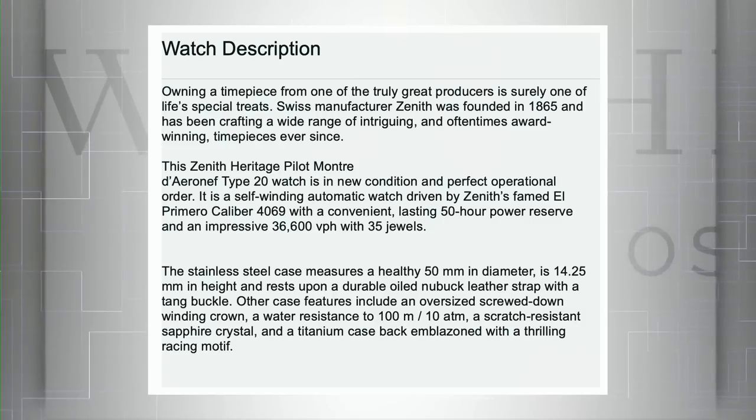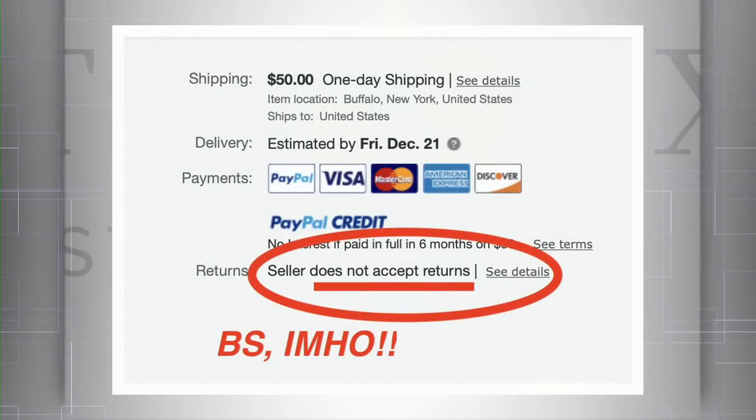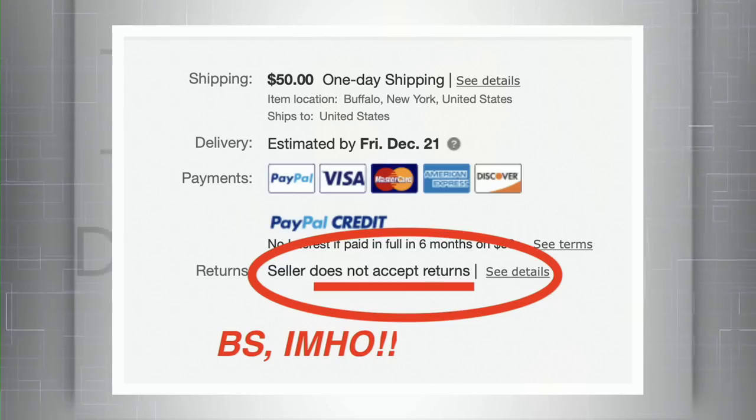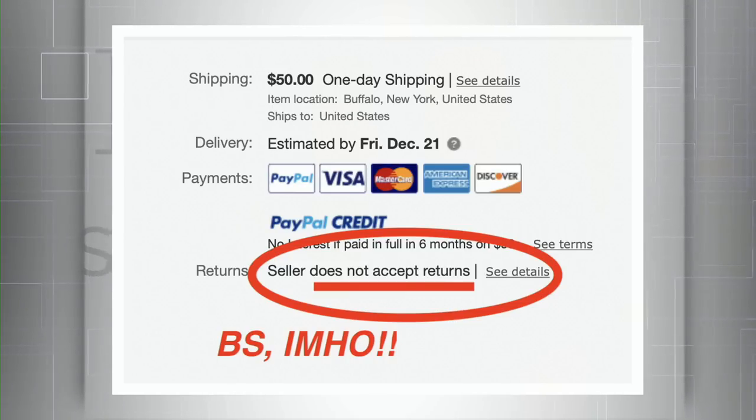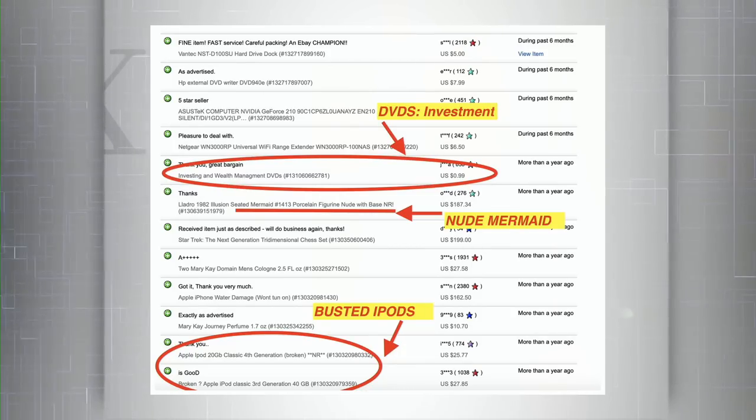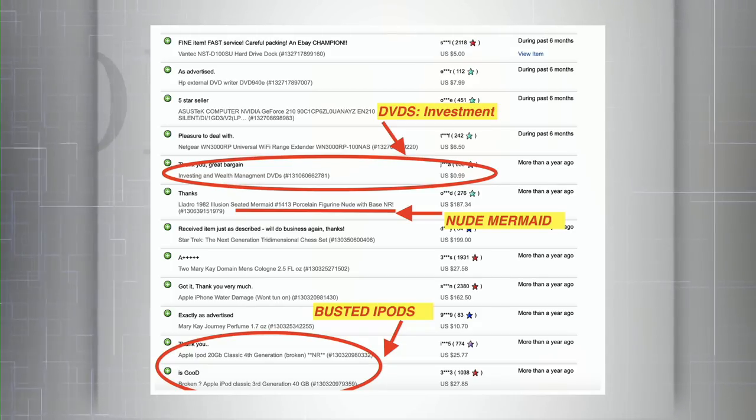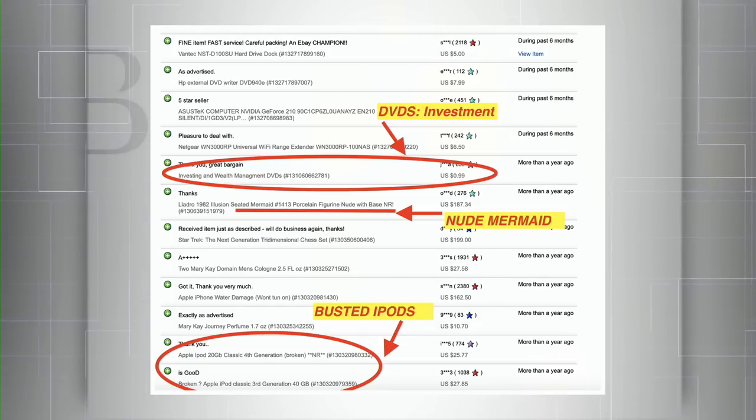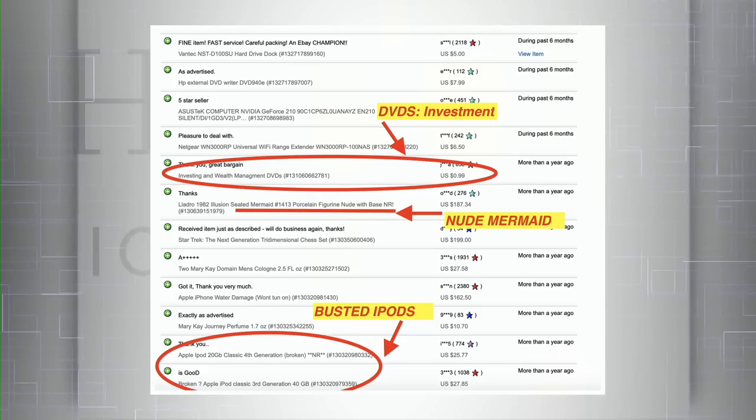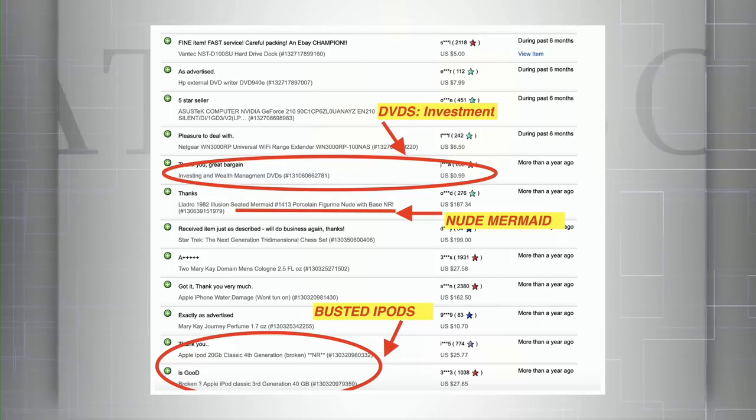The cut-and-paste description describes the clearly 45-millimeter watch as a 50-millimeter watch. The terms guarantee satisfaction—oh wait, seller does not accept returns. At least the seller has impressive sales history: 99-cent wealth management DVDs, a nude porcelain mermaid, and two busted iPods.